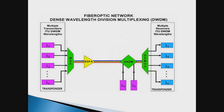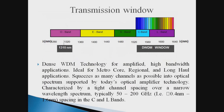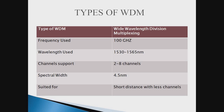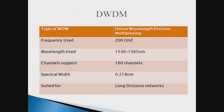This is the transmission window of the DWDM system. I am using the C-band of the wavelength to transmit the DWDM wavelengths, which covers the range of 1520 to 1560 nanometers. The frequency used in the DWDM system is about 200 GHz, and the wavelength range is 1530 to 1565 nanometers. The maximum channels supported is up to 160, and the spectral width of each channel is 0.218 nanometers, which is suitable for long distance networks.